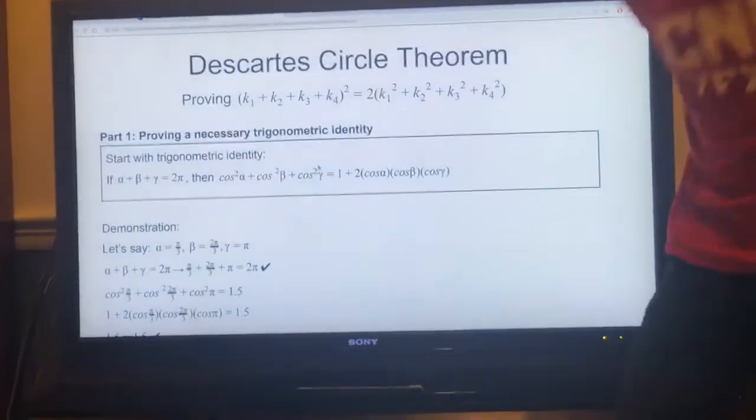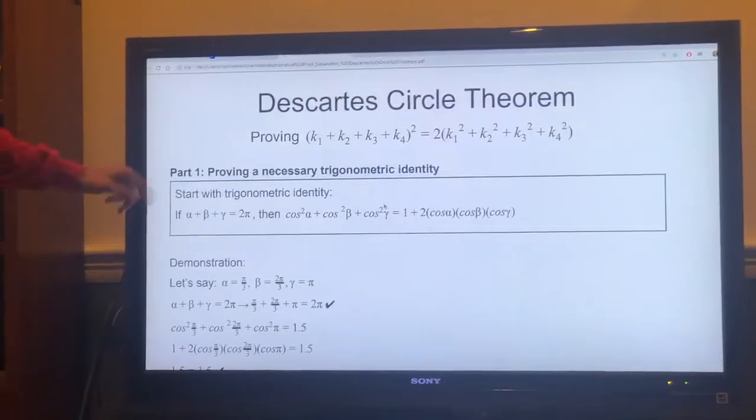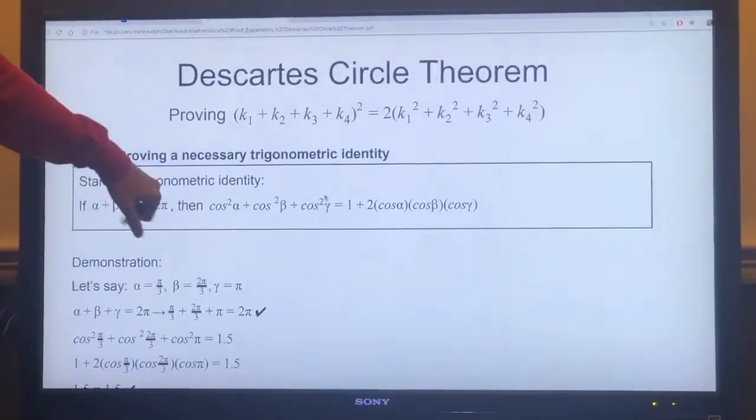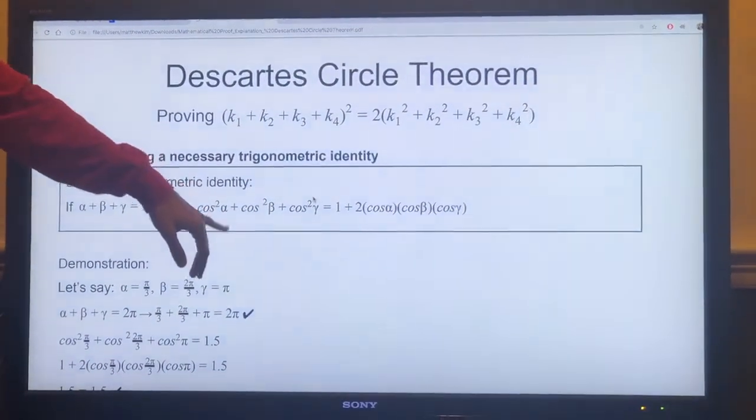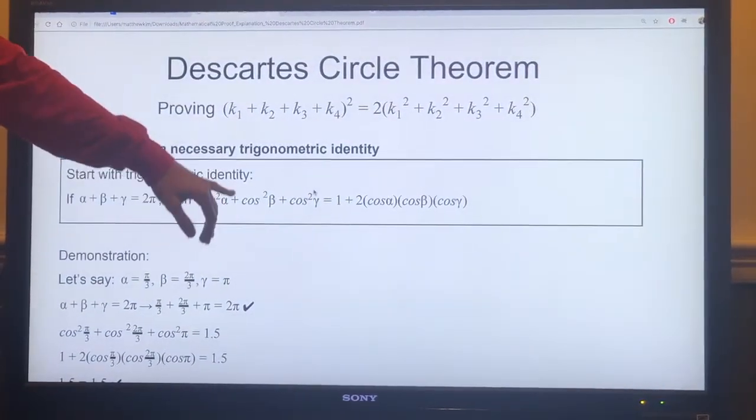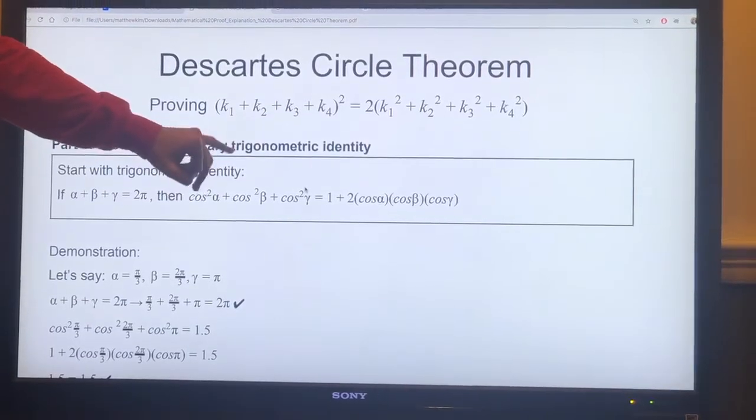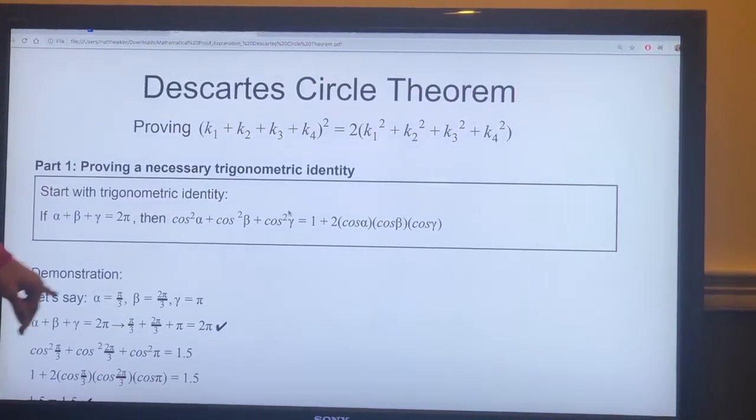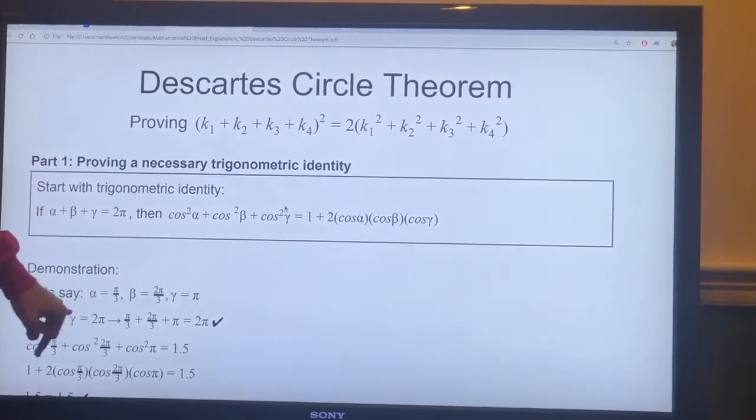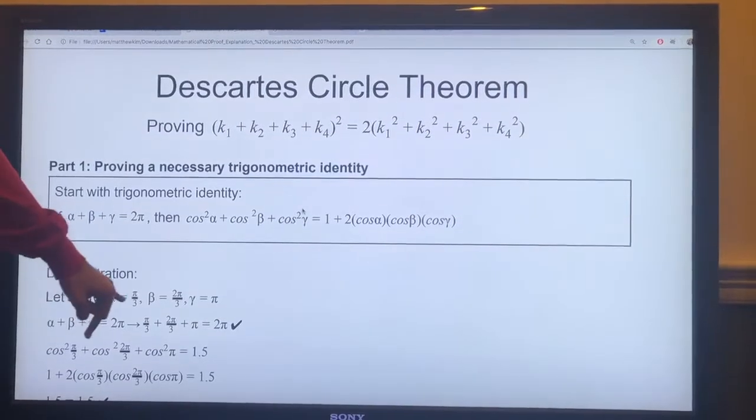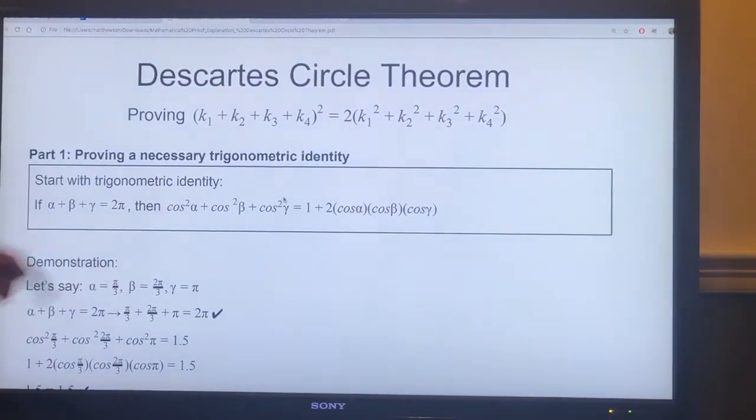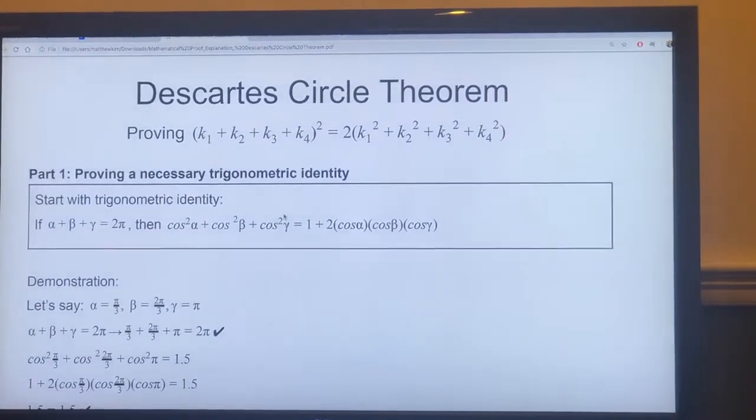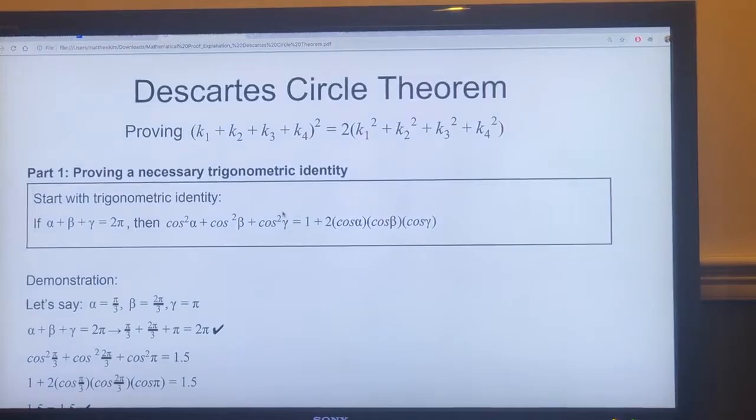Basically, we start with: if alpha plus beta plus gamma equals 2π, then cos²(α) + cos²(β) + cos²(γ) = 1 + 2cos(α)cos(β)cos(γ). To prove it, we just plug in three values for alpha, beta, gamma. Alpha equals π/3, beta equals 2π/3, gamma equals π. Therefore, these three angles equal 2π. Then we just plug it in, and we just make sure that everything's equal to each other.